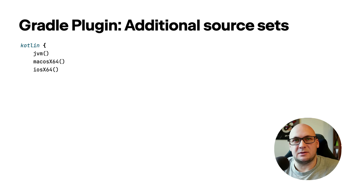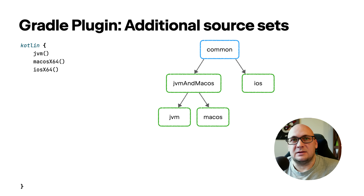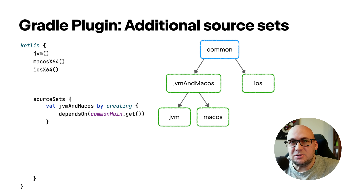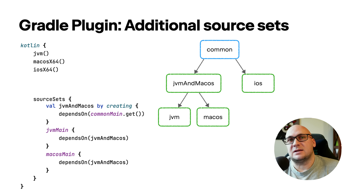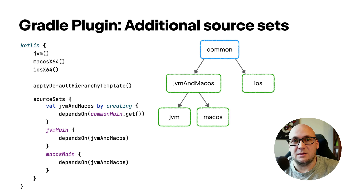We also improved diagnostics for the configuration phase of the plugin. If you attempt to access a source set that doesn't exist because you haven't declared the respective target, you get a warning during project import telling you exactly what to fix. If you need to add an additional source set that the default hierarchy template doesn't provide — for instance, an intermediate source set depending on the common source set with JVM and macOS source sets depending on it — you declare the new source set, configure its dependencies using the dependsOn function, and reapply the template explicitly with the applyDefaultHierarchyTemplate function.